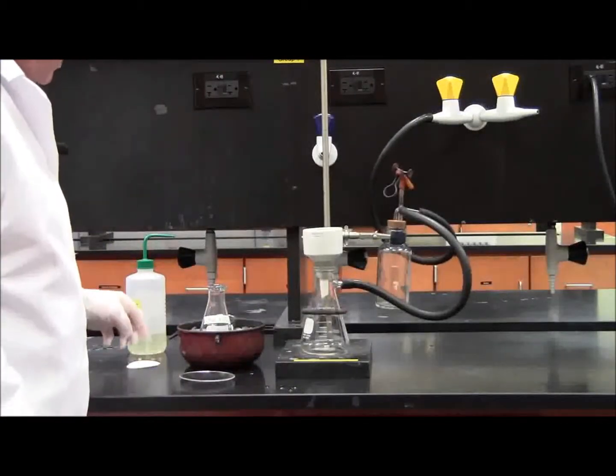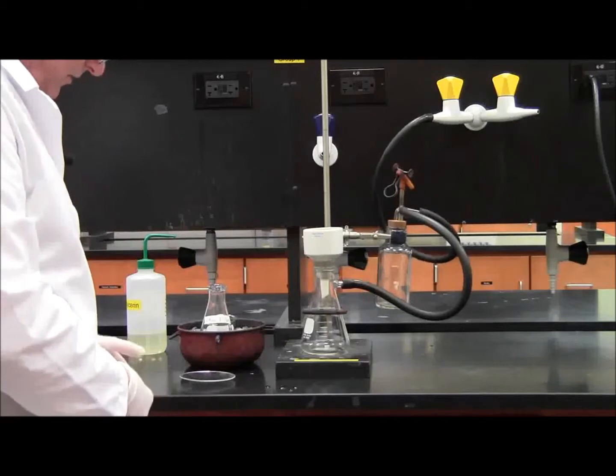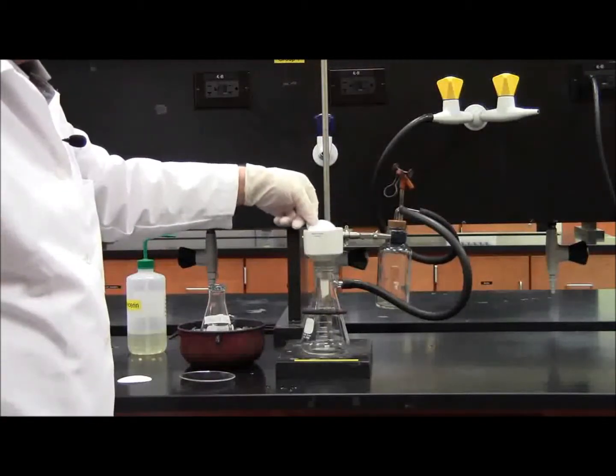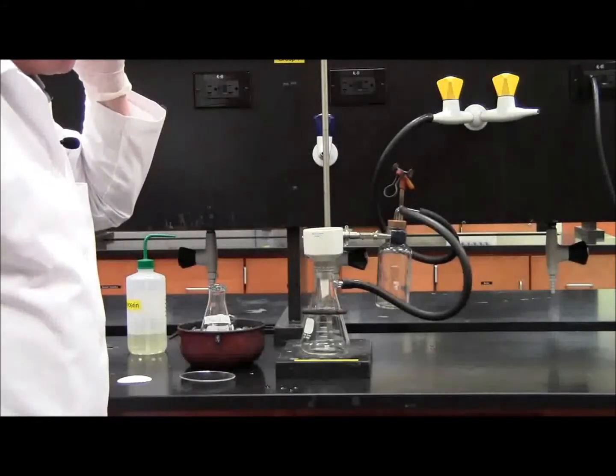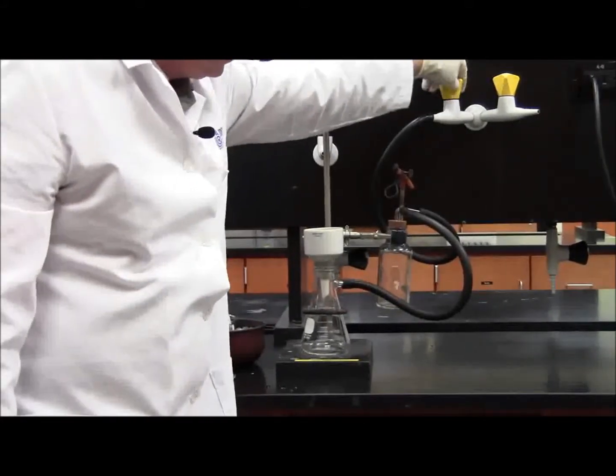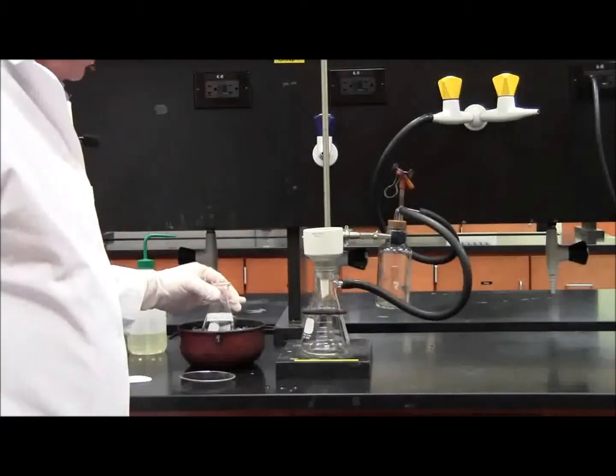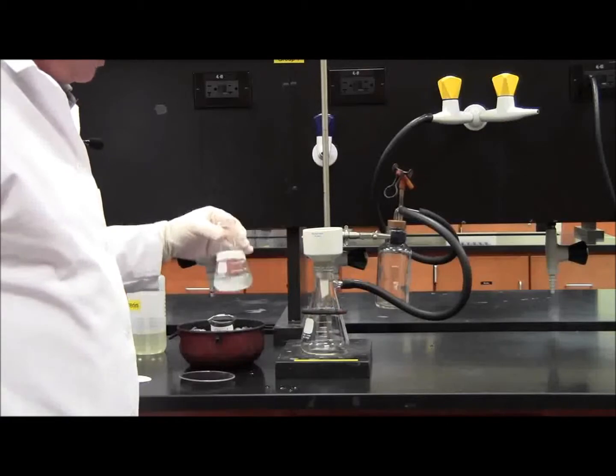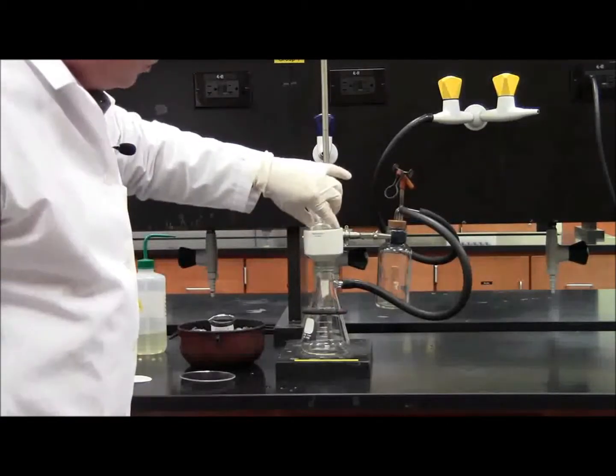Then you're going to want to take one filter paper, put it directly into the center of the Buchner funnel, turn on the vacuum, take the ethanol and benzoic acid crystals, swirl them around a little, and pour them in the center.